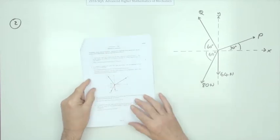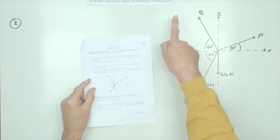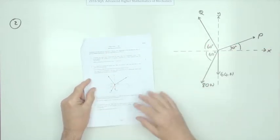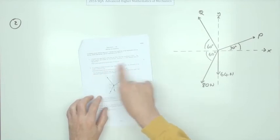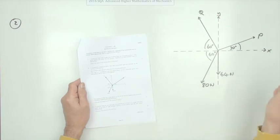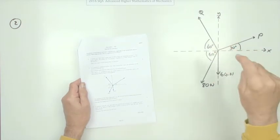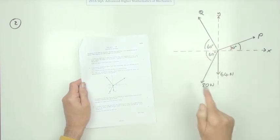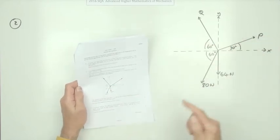So question two then from the 2016 Advanced Higher Mathematics of Mechanics, statics. A wee bit of a story that you can basically ignore. It's just a case of these forces are acting on a point, and they're in a plane, they're co-planar, and they're in equilibrium.